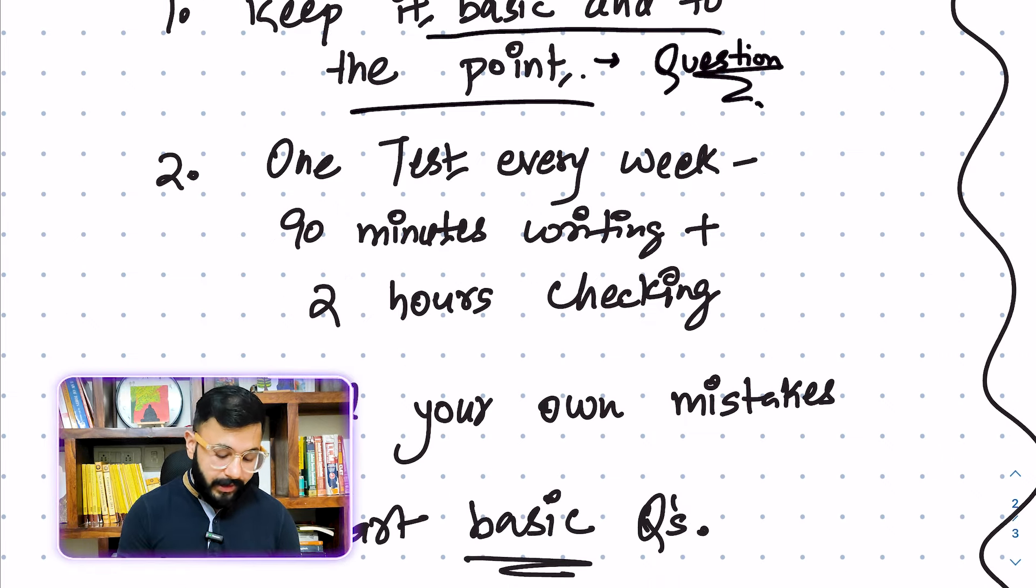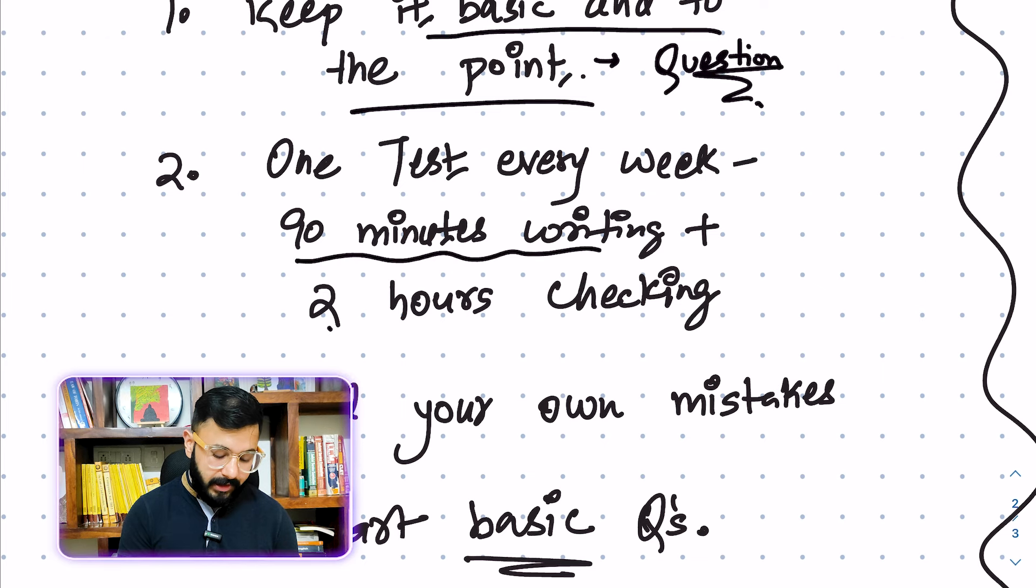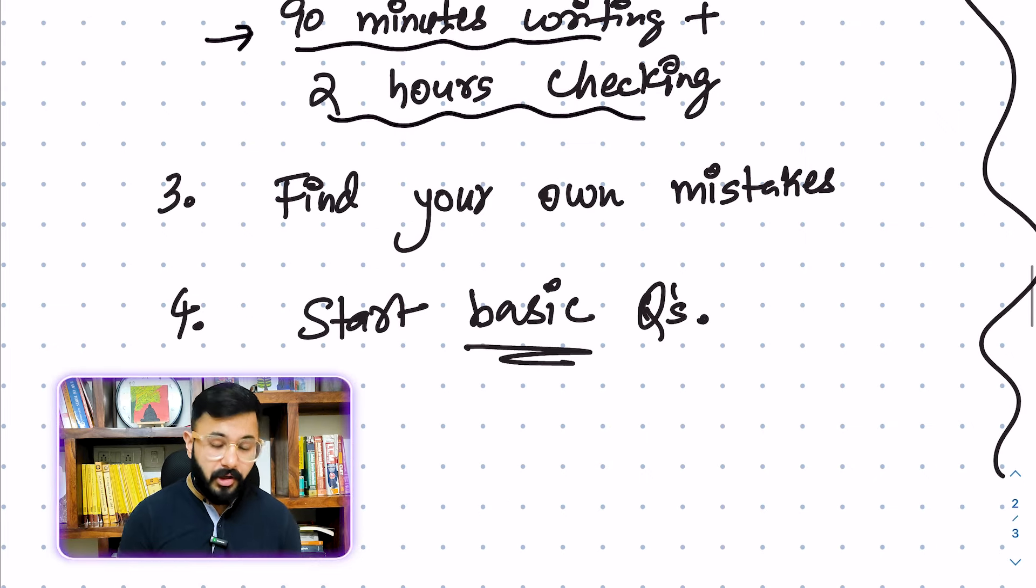Point number two. One test every week, 90 minutes writing and two hours of checking rather than one test every day or anything else. Minimum of one test every week and that test has to be a complete test where you're writing for 90 minutes and then evaluating it. Checking the answers yourself by using the sample answers that you will easily find over the internet. These days you can use ChatGPT, you can put it there and you will get a basic answer. It will be very useful for you to cross check your own answer yourself. That is what is going to improve your performance.